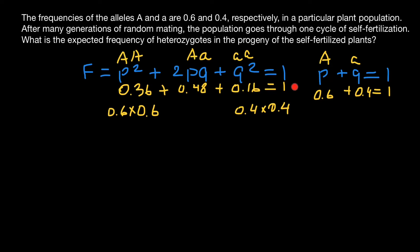Now when we add all three numbers, we get 1. We have the frequencies of the three genotypes before self-fertilization. The next step is to find what the frequencies of the three genotypes will be in the next generation after self-fertilization.